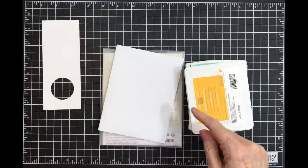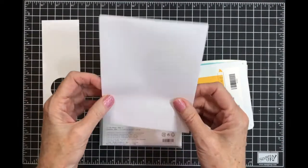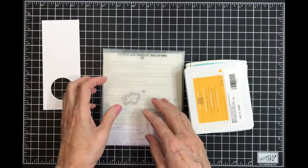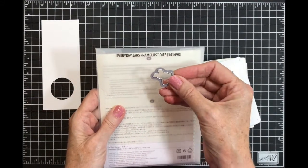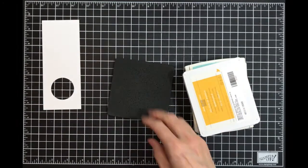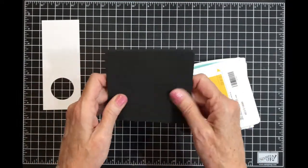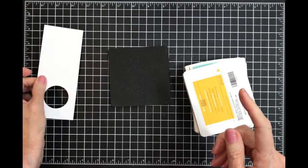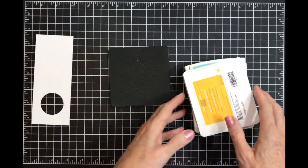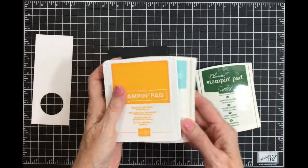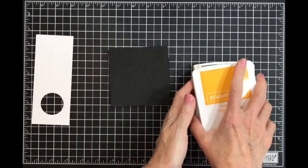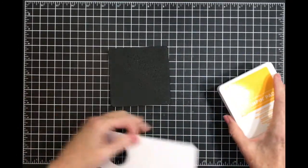I have my envelope. I'm going to be using the Everyday Jar Framelits, specifically the goldfish. I have my piercing mat because I need that when I stamp the background piece. I'm using Mango Melody, Pool Party, and Garden Green ink.